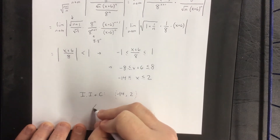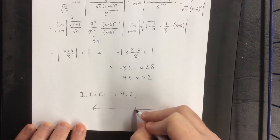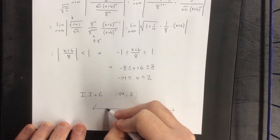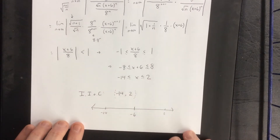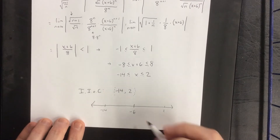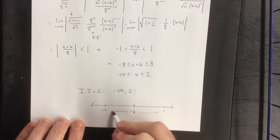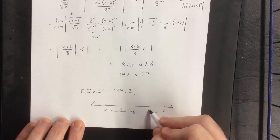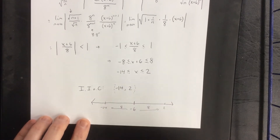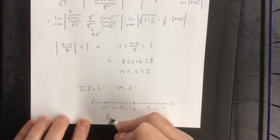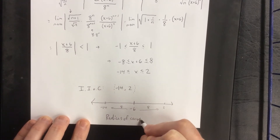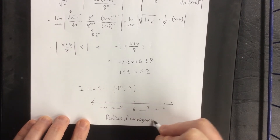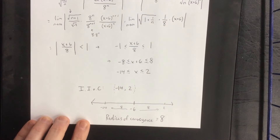From the center of negative 6, the distance out to negative 14 or up to positive 2 is 8, which tells us the radius of convergence is equal to 8. We can state that definitively at this point.